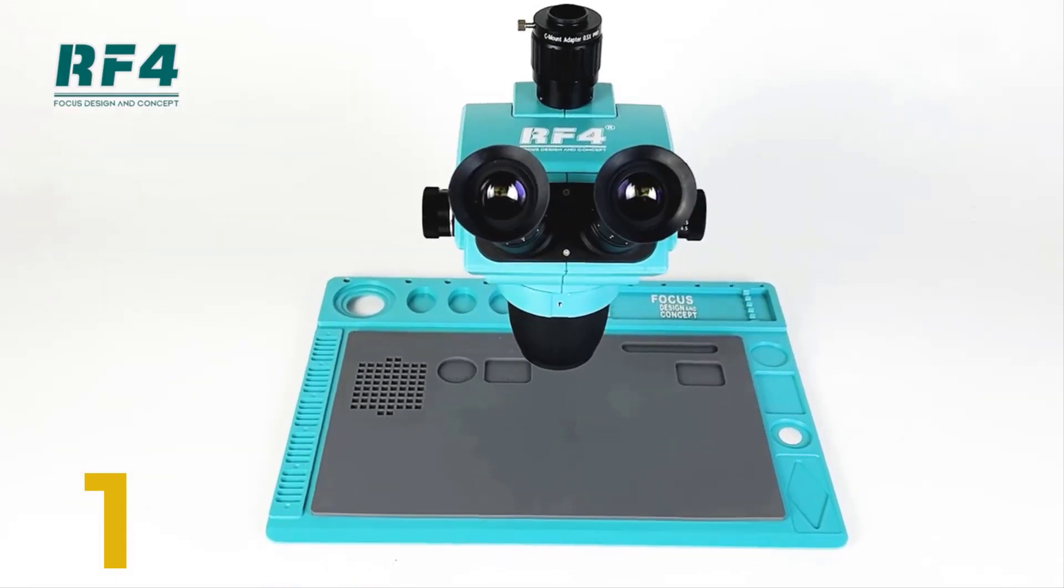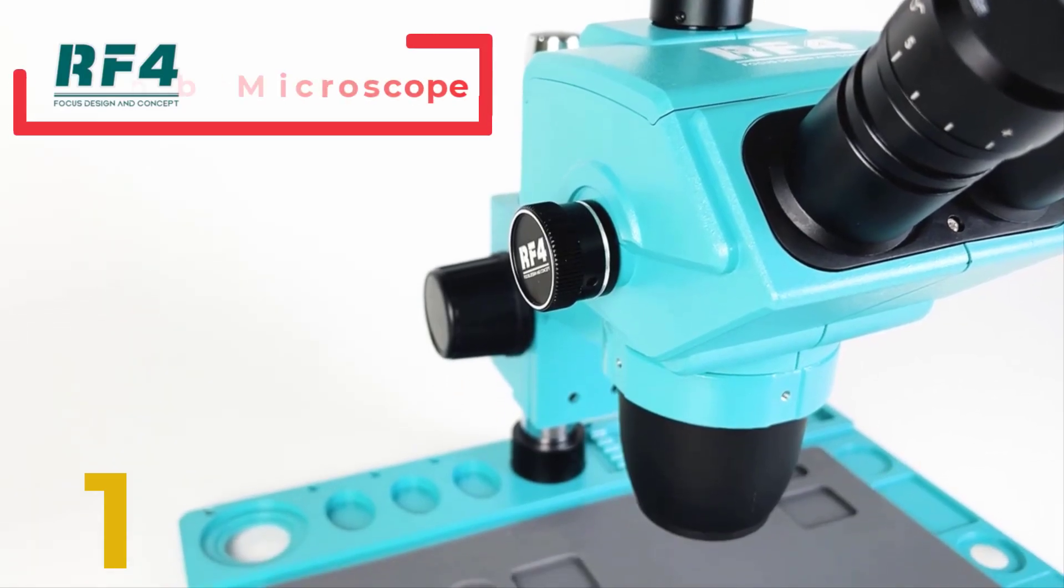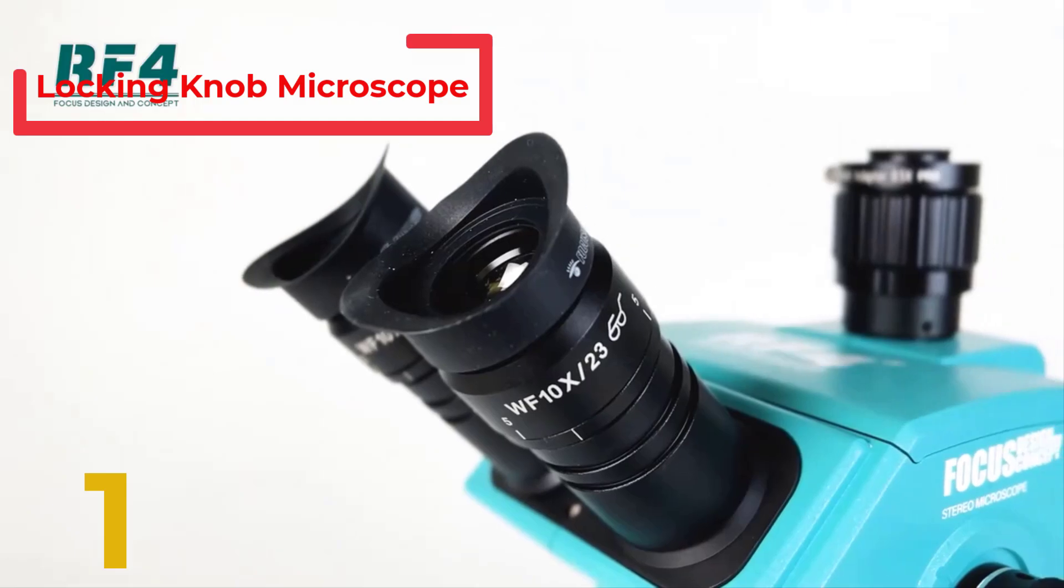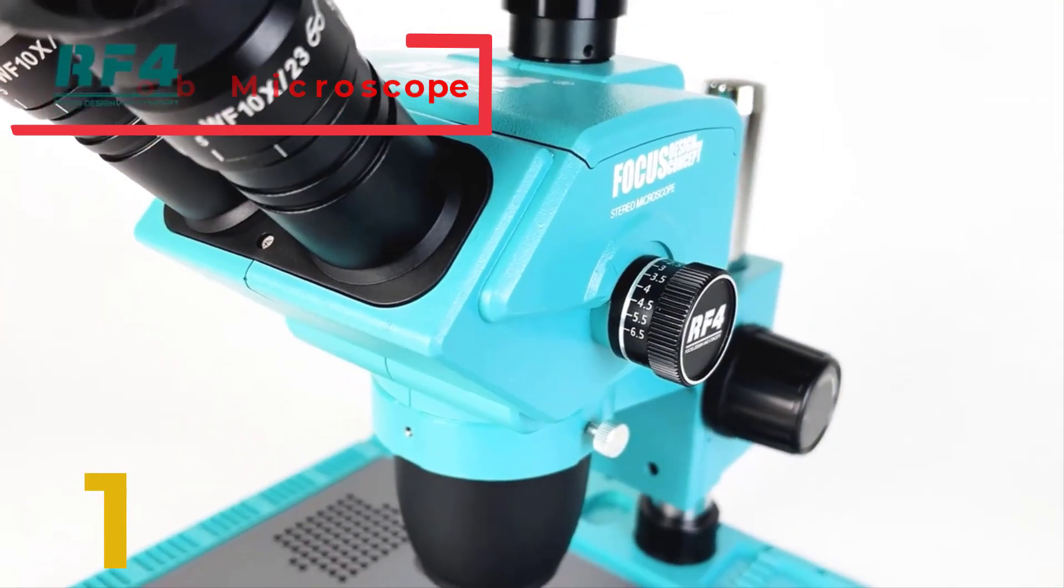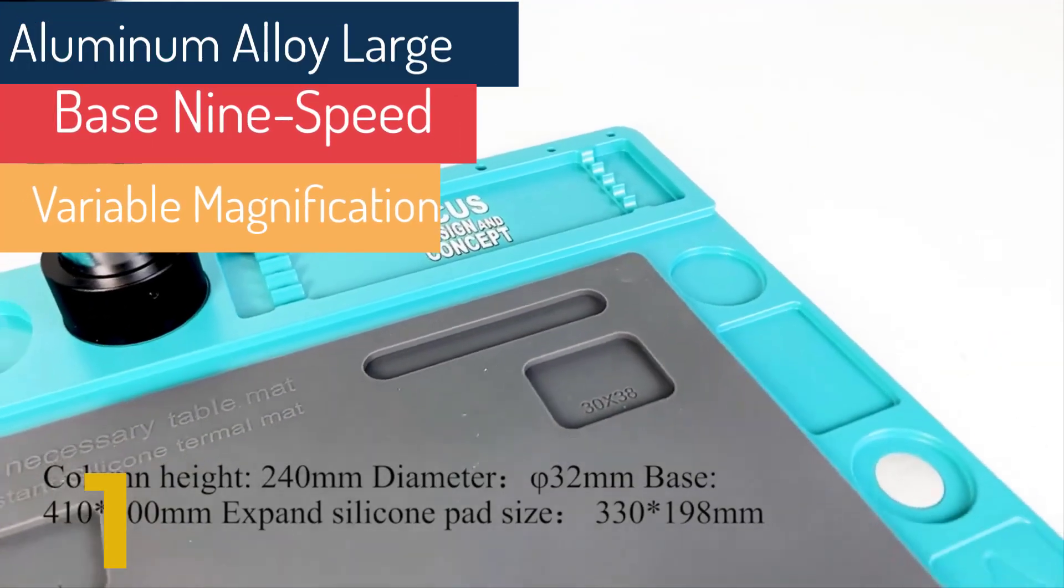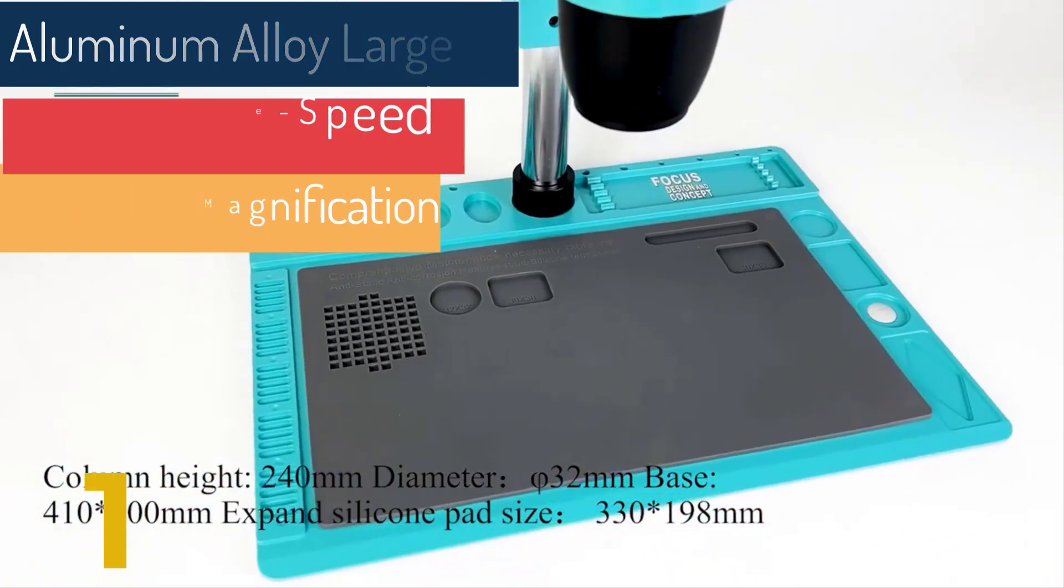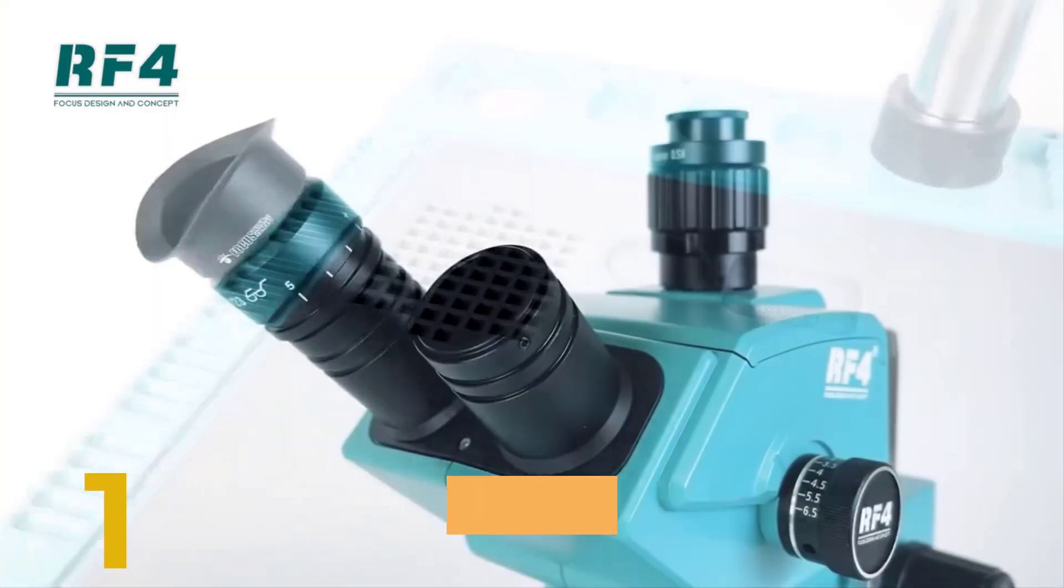Introducing the RF6565 P-Rod E2 microscope, aluminum alloy large base with 9-speed variable magnification and locking knob. Are you looking for a top-notch microscope? The RF6565 P-Rod E2 model offers exceptional features that make it ideal for both enthusiasts and professionals. With its upgraded functions, it stands out as a leading choice for detailed and precise observations.